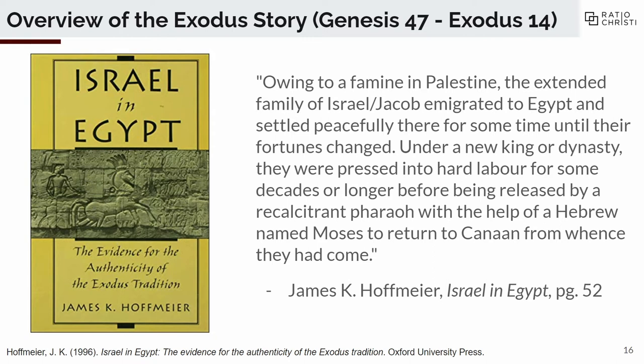Let's look at the introduction. First, just to get our bearings on what the story is, here's a nice summary from James Hoffmeyer, whose name will come up quite a bit. Owing to a famine in Palestine, the extended family of Israel, or Jacob, immigrated to Egypt and settled peacefully there for some time until their fortunes changed. Under a new king or dynasty, they were pressed into hard labor for some decades or longer before being released by a recalcitrant pharaoh with the help of a Hebrew named Moses to return to Canaan from whence they had come.